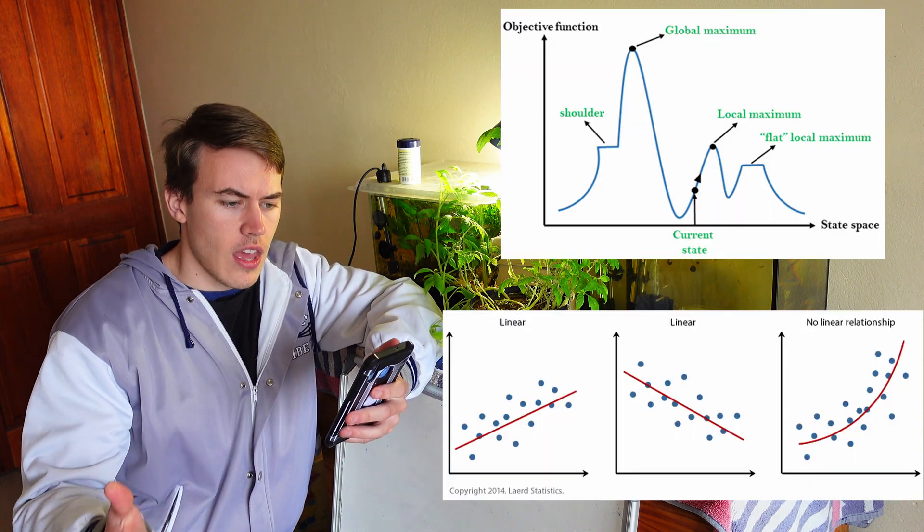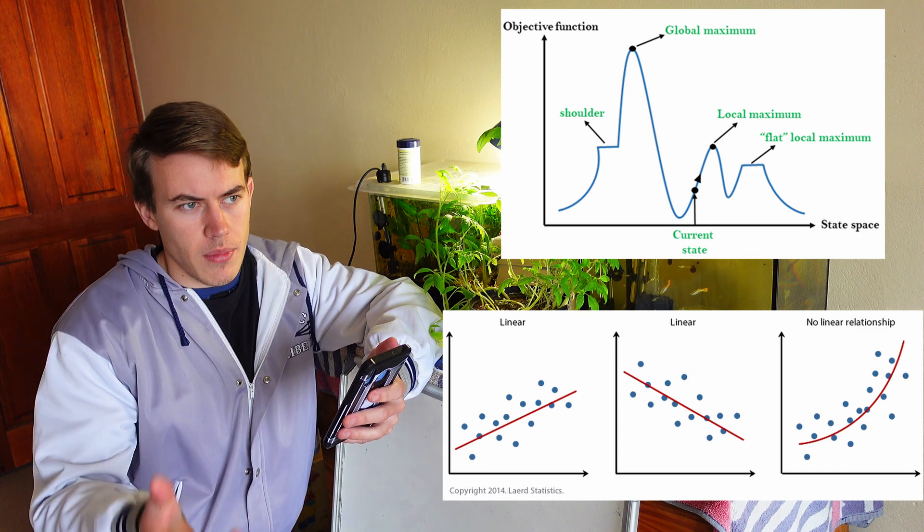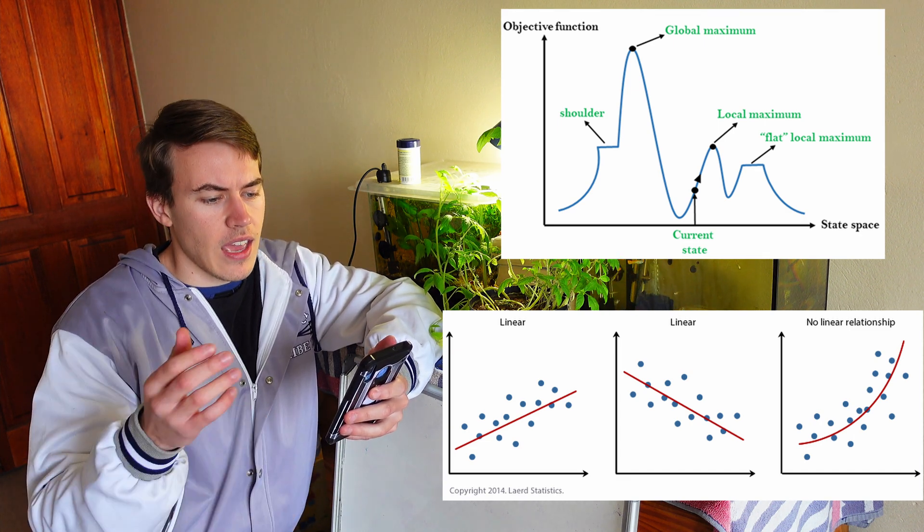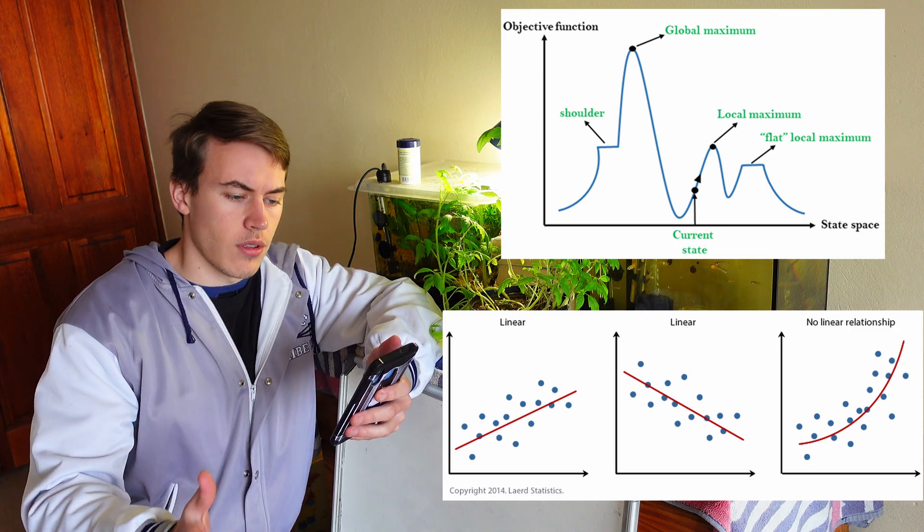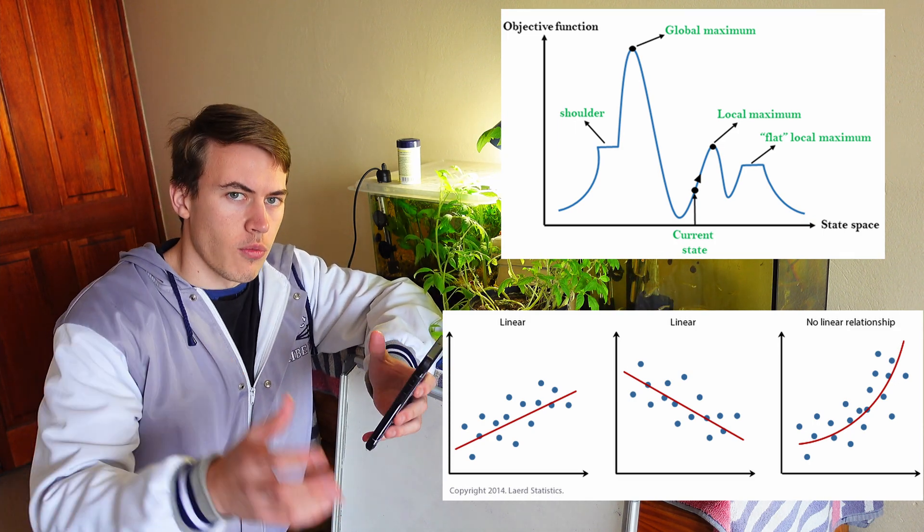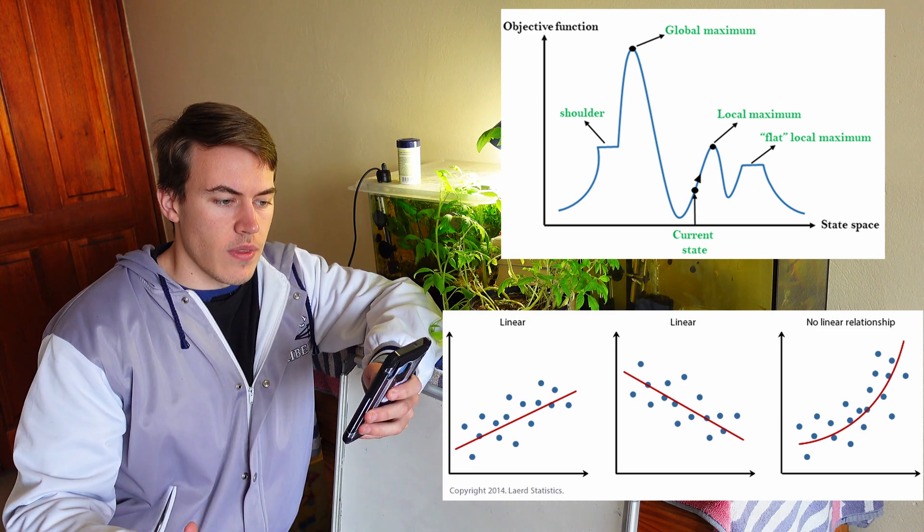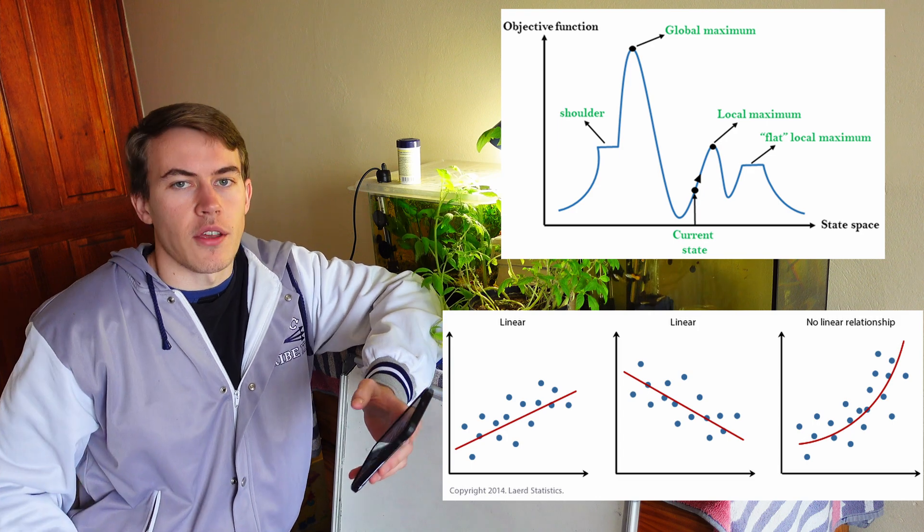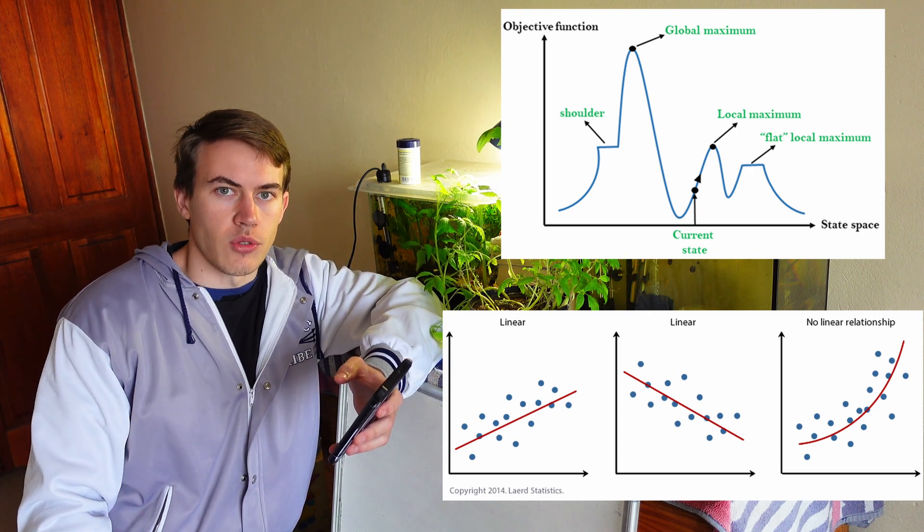We also then went on to do hill climbing and linear regression—basically fitting curves to data and finding minimum and maximum solutions respectively. So like simulated annealing, k-nearest neighbors we also used here. Basically different algorithms for searching and classifying through big hunks of data.